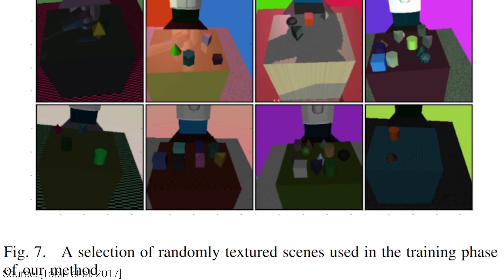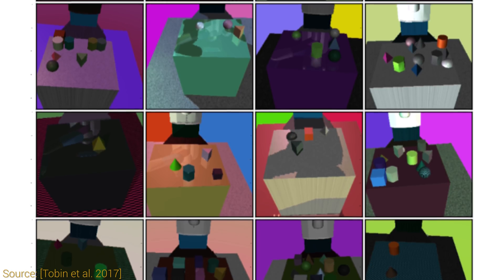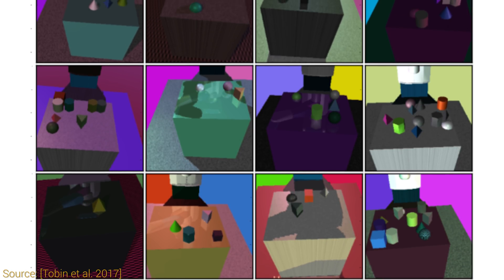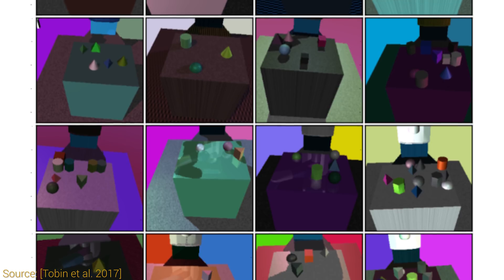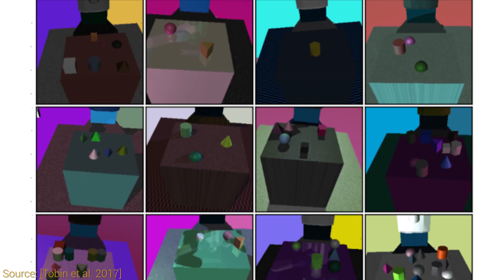In these experiments, the following parameters were heavily randomized: number of shapes and distractor objects on the table, positions and textures on the objects, table, and the environment, number of lights, material properties, and the algorithm was even exposed to some random noise as well in the images.